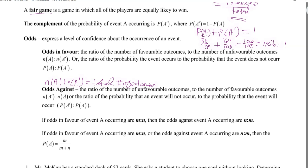Or, odds in favor is the ratio of the probability the event occurs to the probability that the event does not occur — you'll see this in the book, but we're not going to use that form; we'll stick with the counts. Odds against are the ratio of the number of unfavorable outcomes to the number of favorable outcomes — basically just reversing it. So odds in favor: favorable to unfavorable. Odds against: unfavorable to favorable.